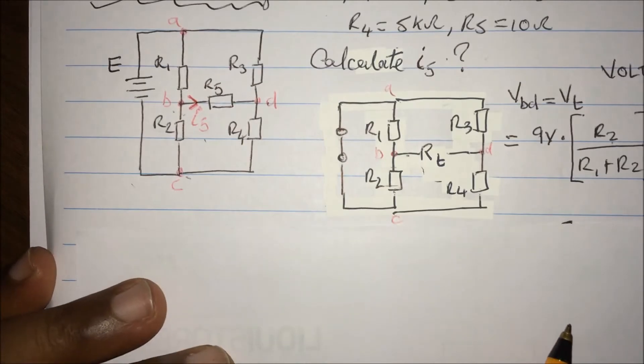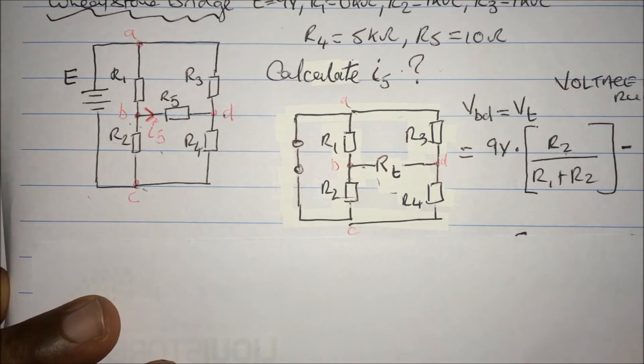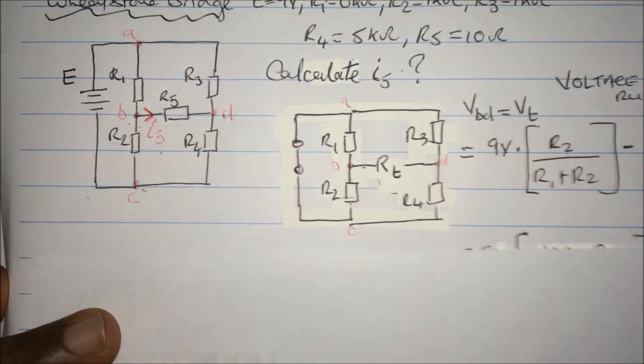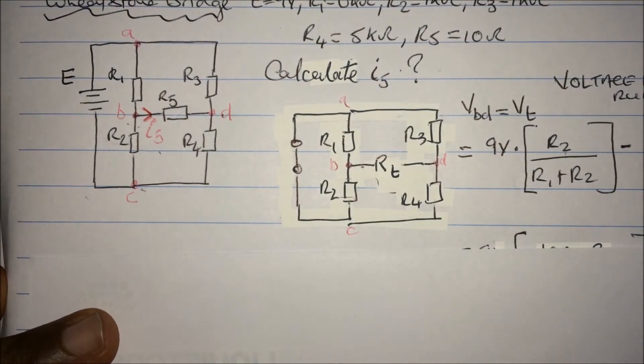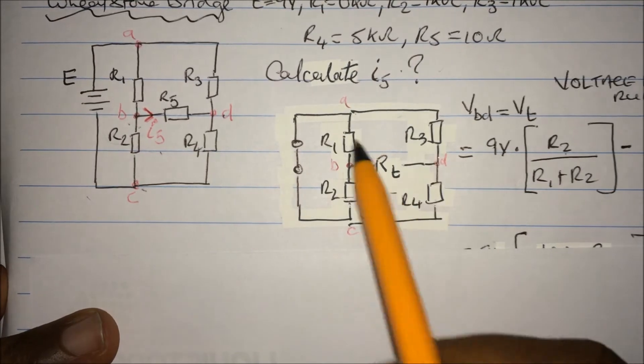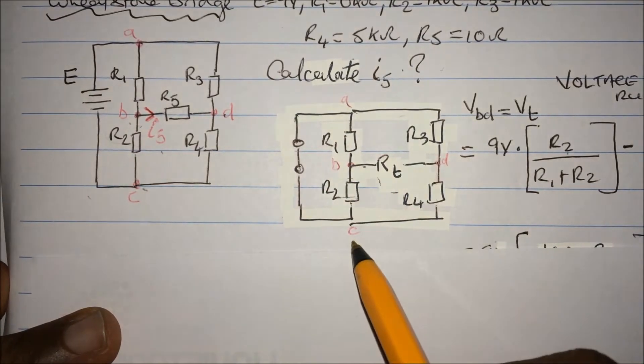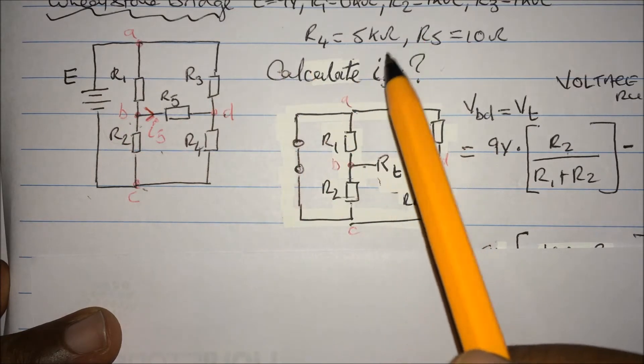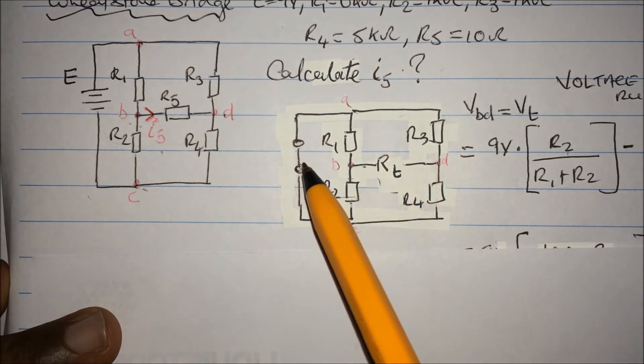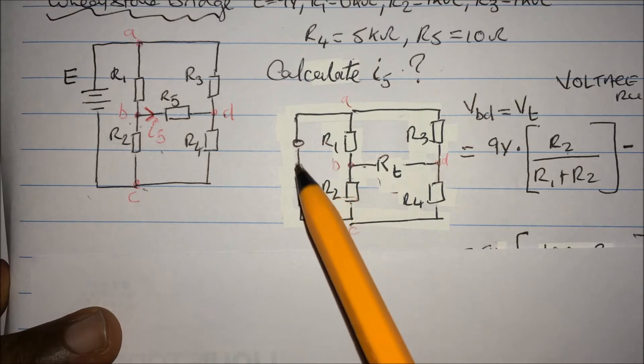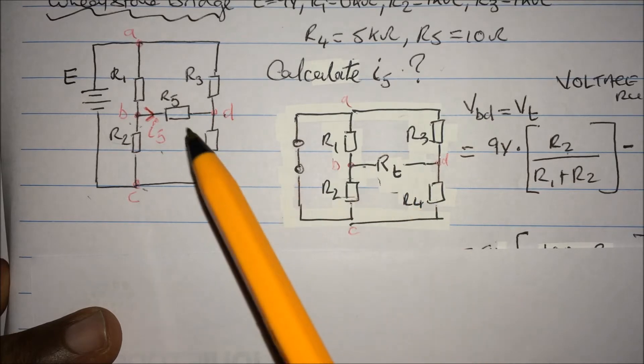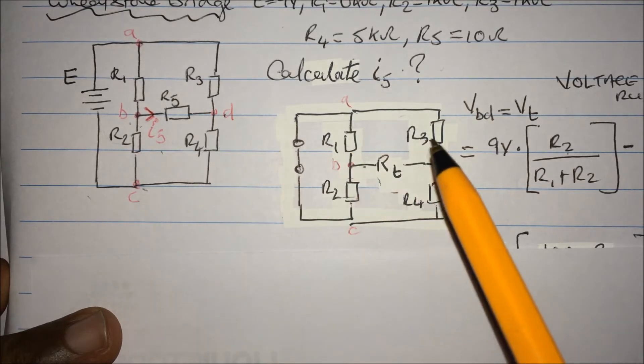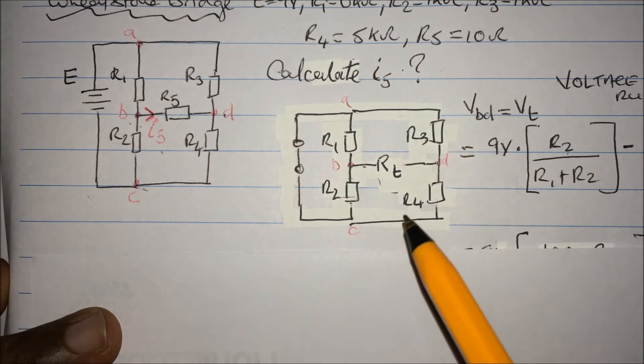So we calculate I5. What I did here, I've redrawn that circuit, and saying that in Thevenin theorem we try to short-circuit the source, and saying R1, R2, and then put R5 in there. Just forget that I5 for the moment and just put the same resistors again and leave the R5 in.